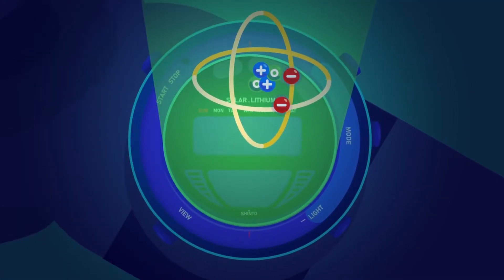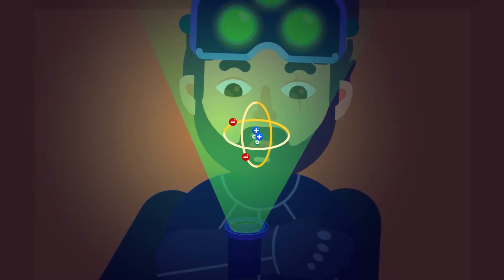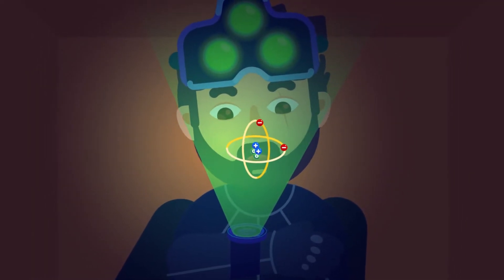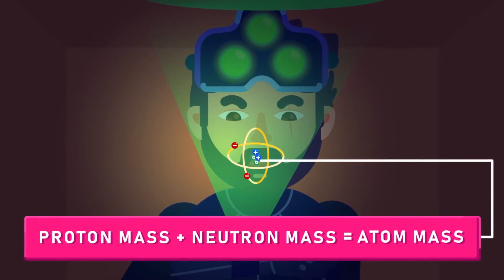The mass of the electron is much lighter than the other two, so it is negligible that the mass of an atom only depends on the number of protons and neutrons in the atom's nucleus.